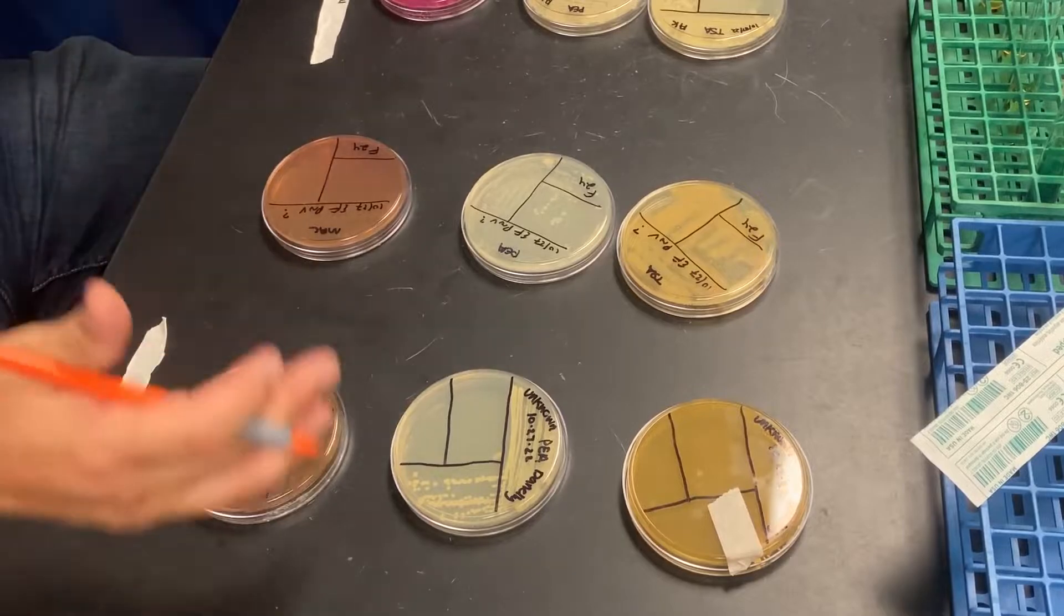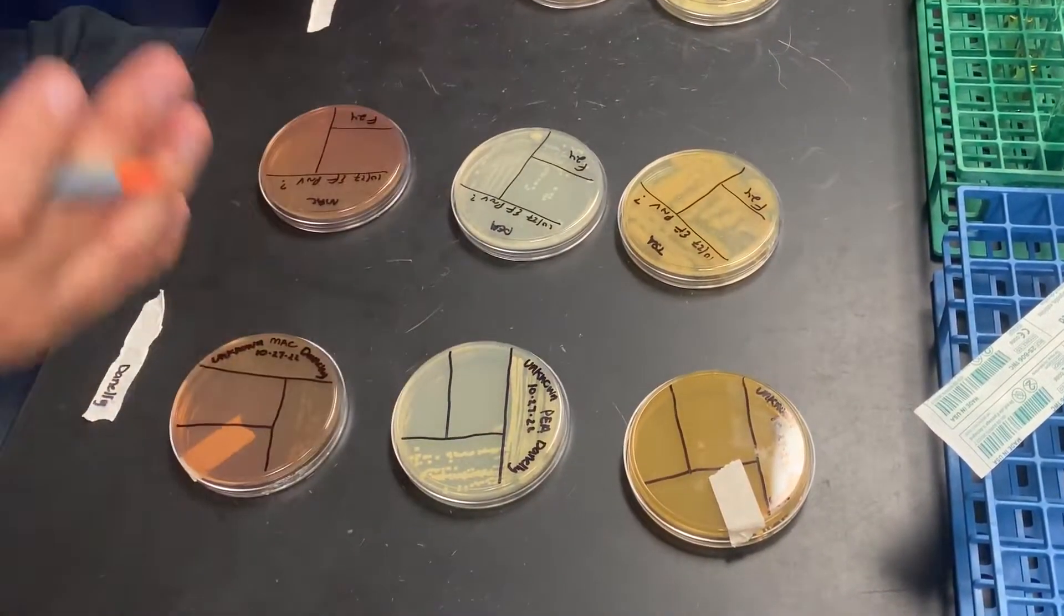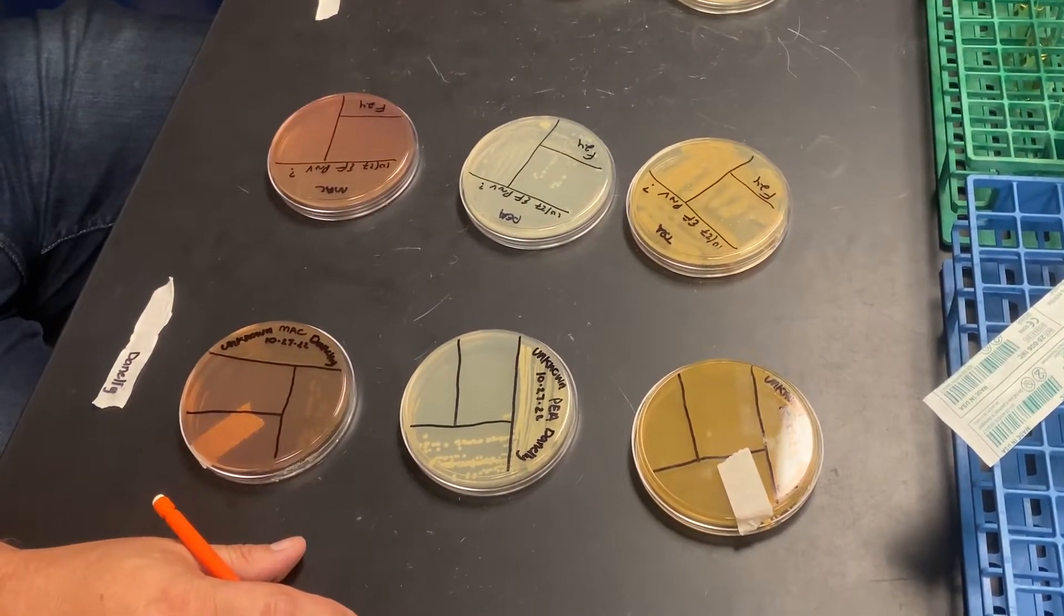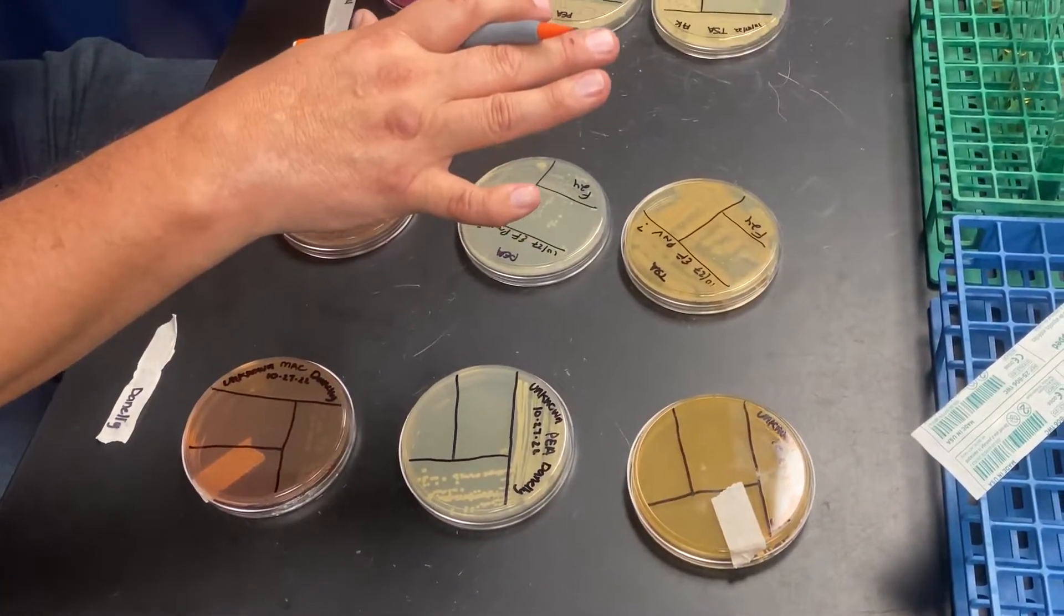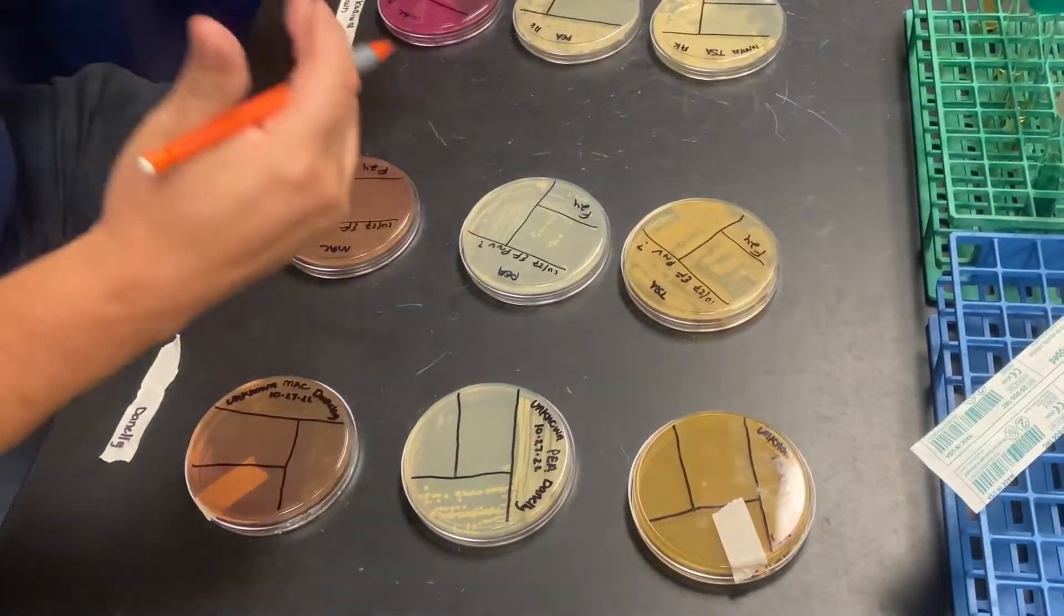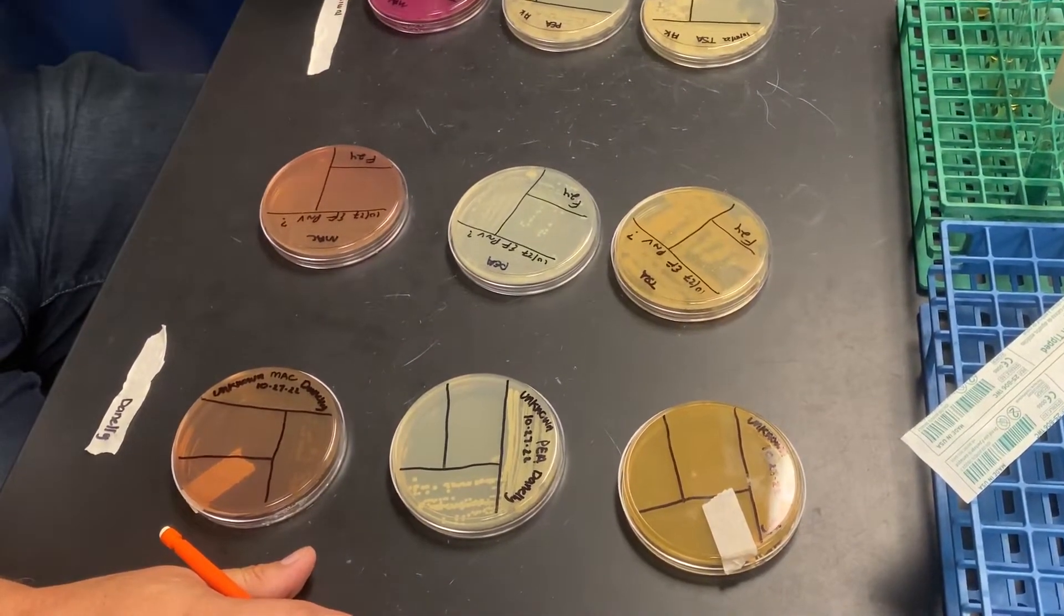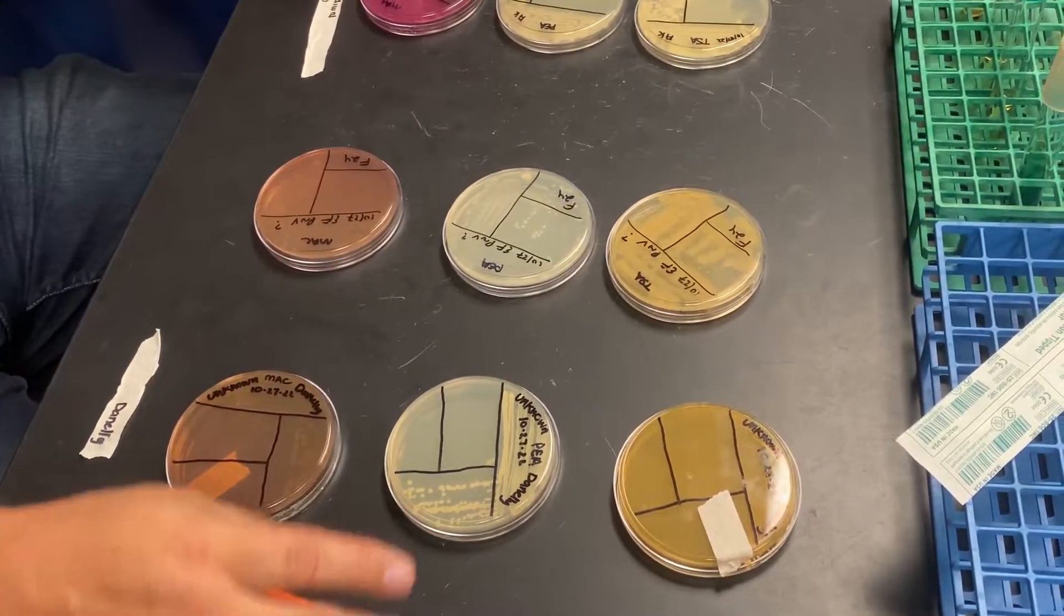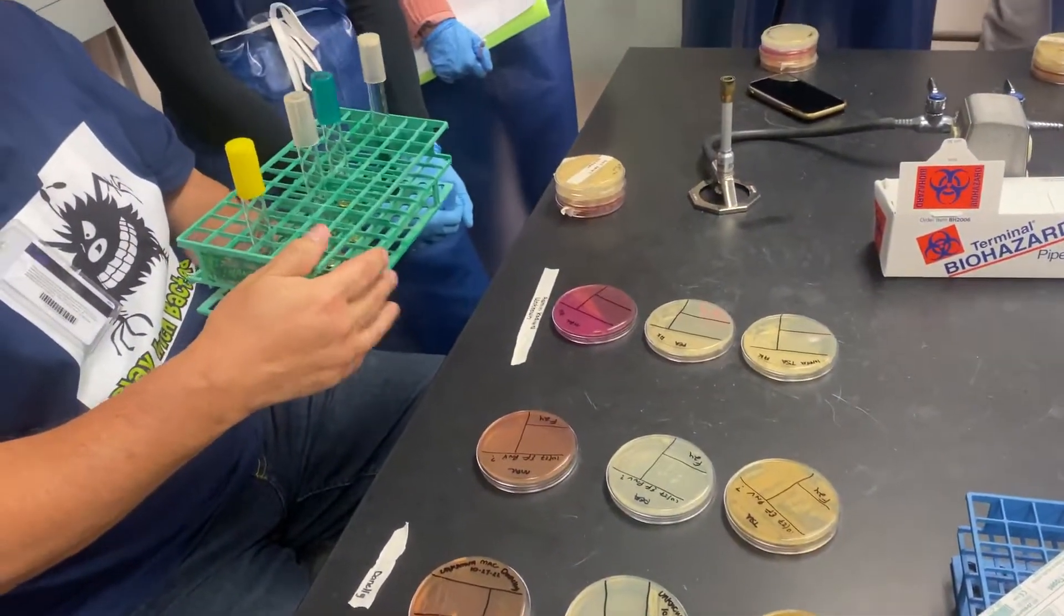So next time, because we're not going to have time today, next time your task will be for those gram-positives to do a gram stain to figure out its morphology. Okay? So now you know how to think about it critically. What you're going to do today is what? But what are you going to do? The gram negative, and where are you going to put it? EMVIC.